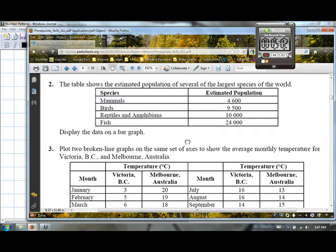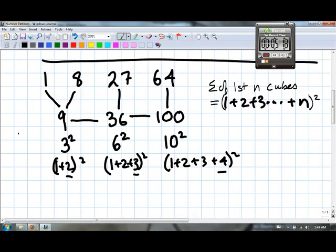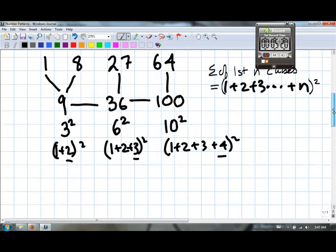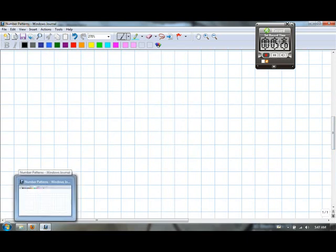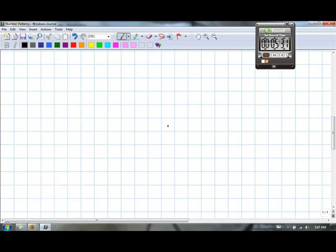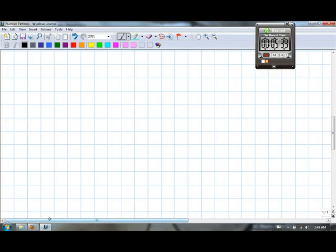The table shows the estimated populations of several of the largest species in the world. Display the data in a bar graph. Once again, I guess the neatest way for me to display such data in a bar graph is to simply just place the names, the nominal data, along the y-axis, simply because, at least for me, I can write these things horizontally. And that's what I'm going to do.